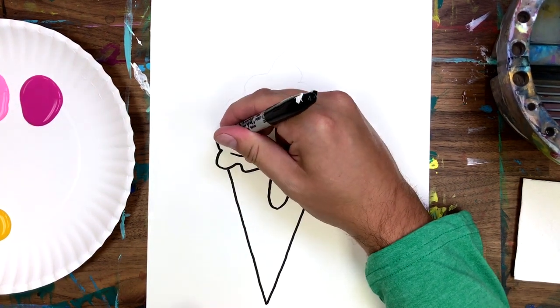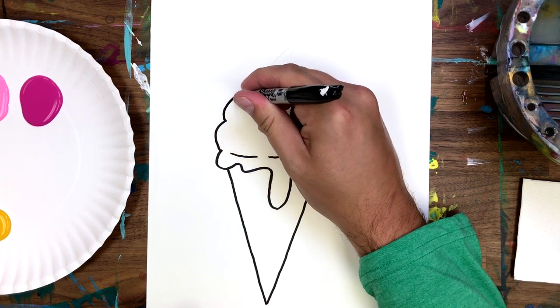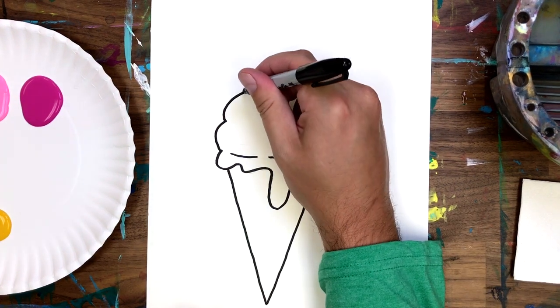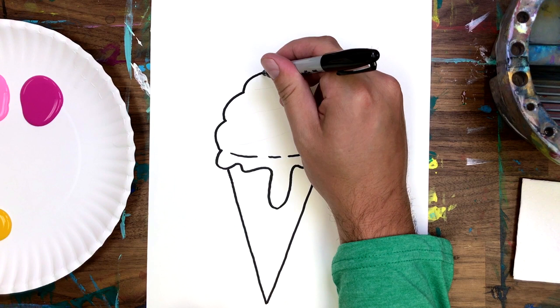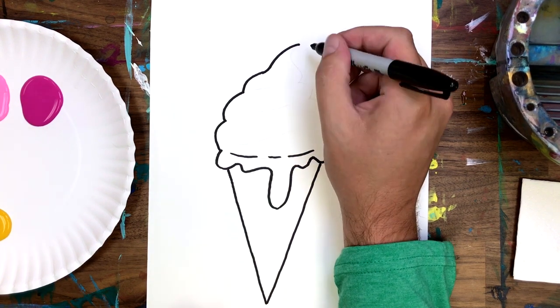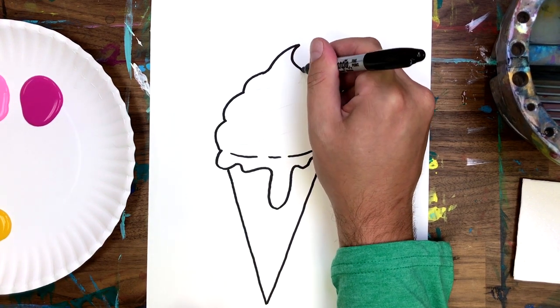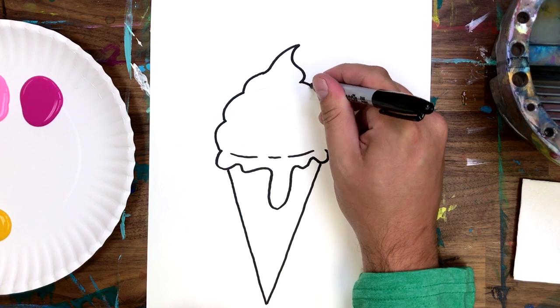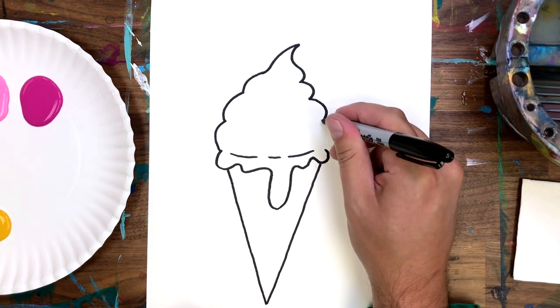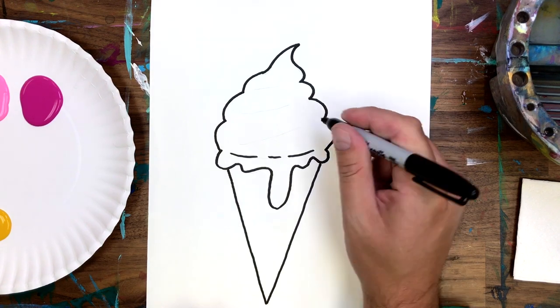To add in the rest of our ice cream, let's start on the left side with one, two, three little bumps, and turn that top one into the little swirl that the soft serve machine makes. Now we're going to bring it down on the other side with one, two, three, I guess four bumps. Notice how they're a little bit higher.